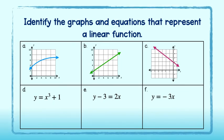Okay, it's your turn. Identify the graphs and equations that represent a linear function. Out of the graphs, only b and c represent linear functions because they are straight lines and they pass the vertical line test. Graph a is not a straight line, so it is not a linear function.